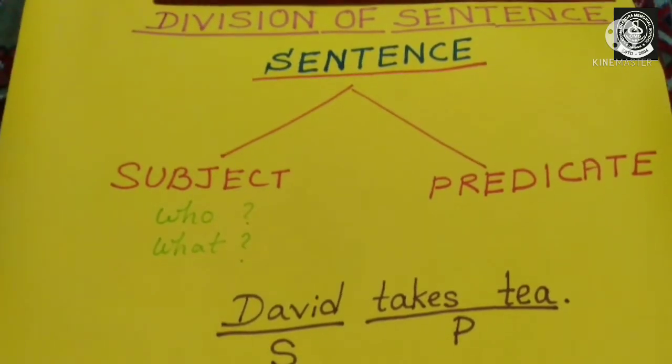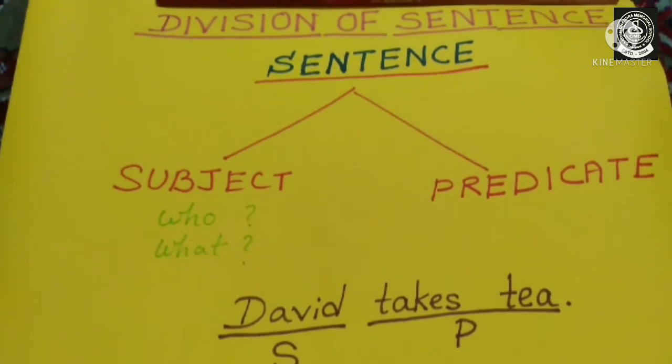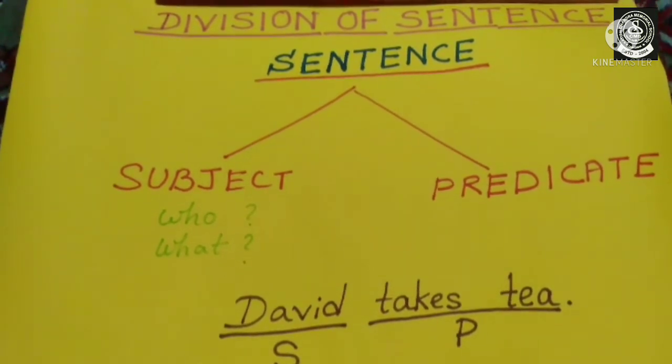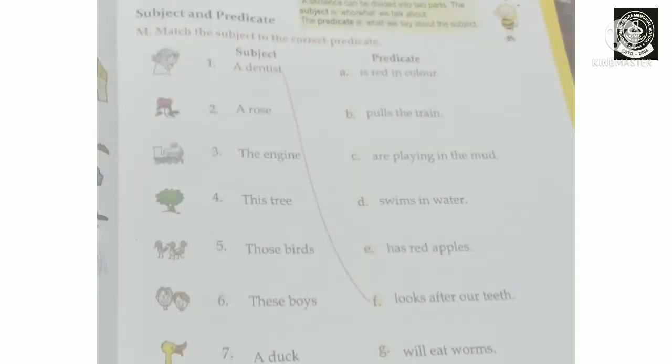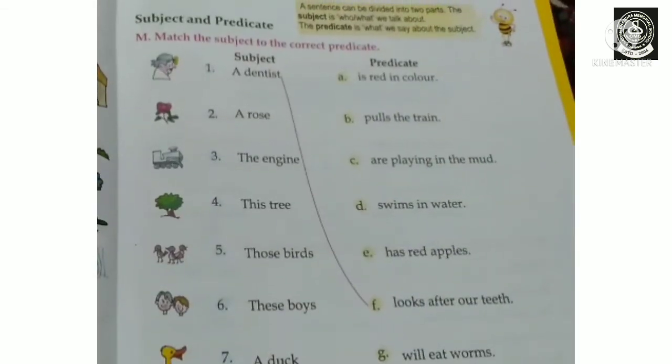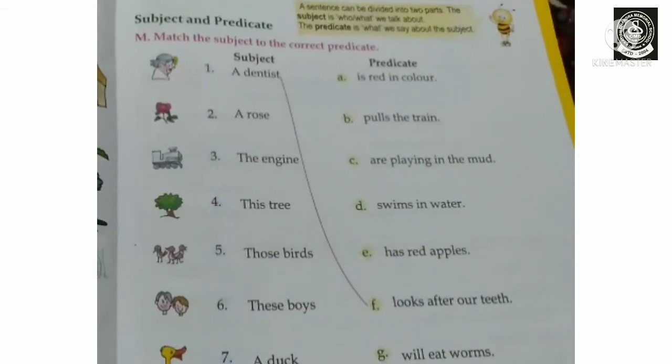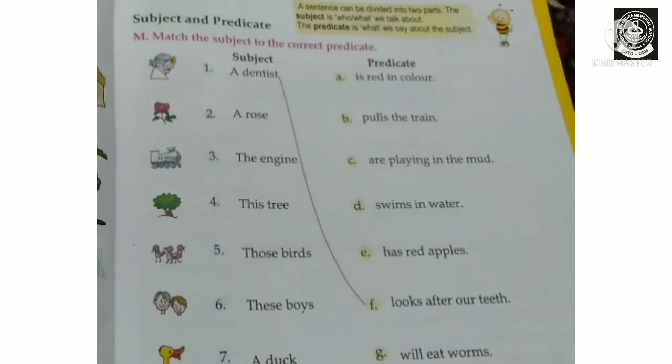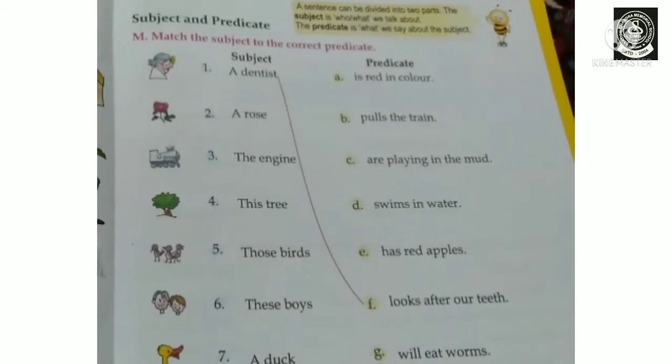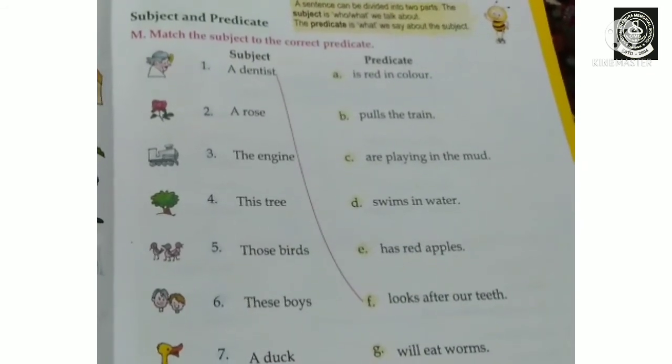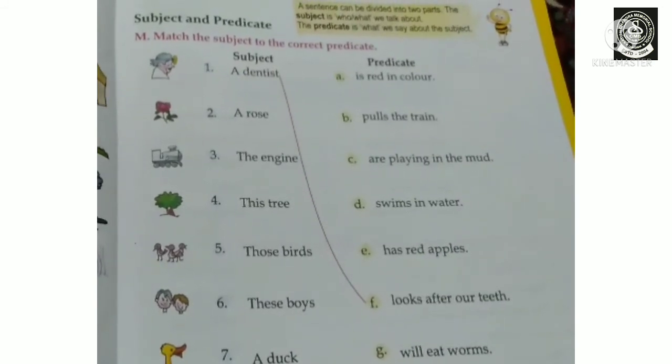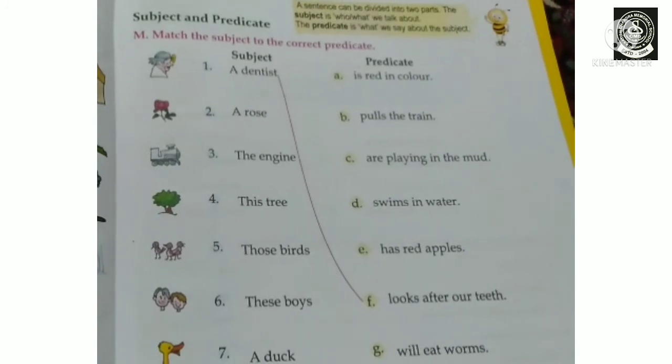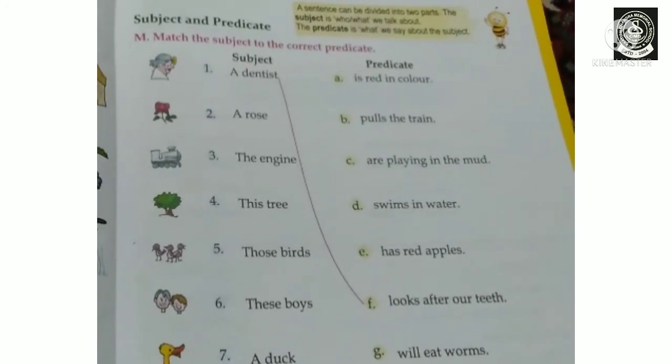So dear children, I hope that now you can easily identify subject and predicate. So children, your homework will be to do exercise M page number 17 in your book. You have to match the subject to the correct predicate. See you in the next class. Till then, all of you take care. Bye bye.